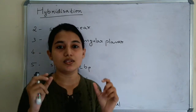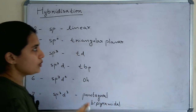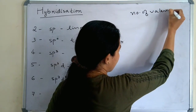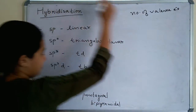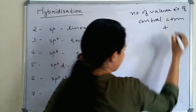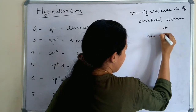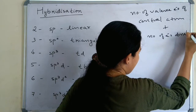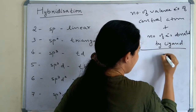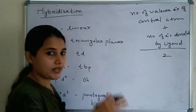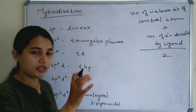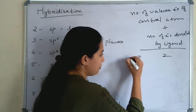In hybridization there is a short trick or formula, which is: the number of valence electrons of the central atom, plus the number of electrons donated by the ligand, divided by 2. When you add the valence electrons of the central atom and the number of electrons donated by the ligand, then divide by 2, a number is formed.